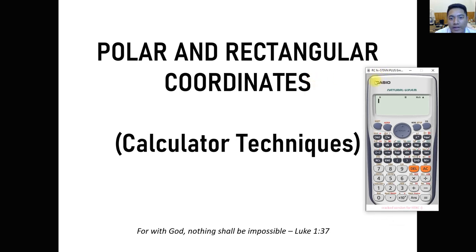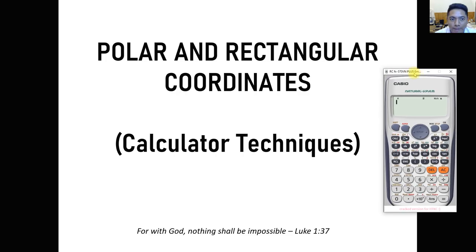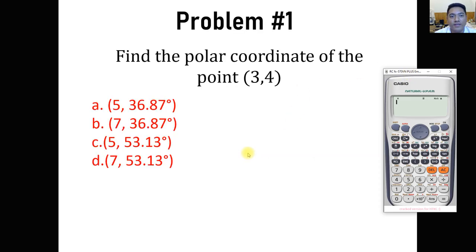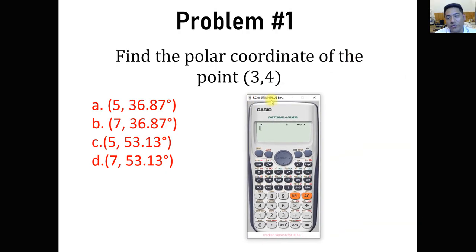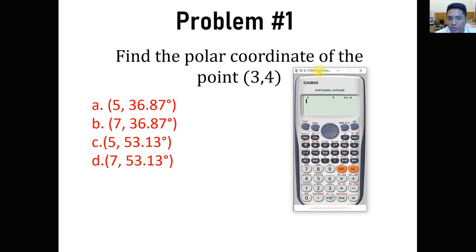Hi, so for today we are going to talk about polar and rectangular coordinates. This is a continuation about calculator techniques. We have 5 problems today we are going to solve using the calculator — from rectangular to polar and vice versa. For problem number 1, find the polar coordinate of the point (3, 4). This is a 2-coordinate system and we wish to find the polar coordinates. We are going to simply use our calculator to convert this to polar.